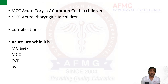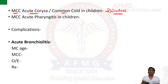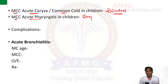Moving further: the most common cause of acute coryza or common cold in children — and in adults — is rhinovirus. If they ask about the most common cause of acute pharyngitis in children, the answer is Streptococcus pyogenes. Please remember: Streptococcus pyogenes is the most common cause of acute pharyngitis in children.